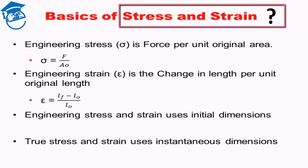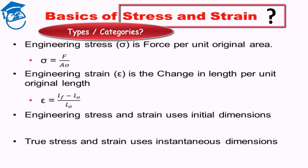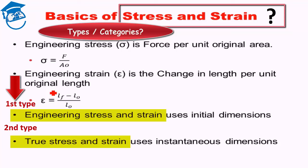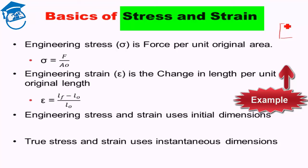There are two types of stress and strain we will be discussing: one is known as engineering stress and strain, and the other is true stress and strain. This discussion will mainly deal with engineering stress and strain. Suppose we have a block with an area of cross section A₀ and we apply a load or force F upward and downward — the material will try to resist deformation but will actually transform. The engineering stress is the force divided by the original area of cross section A₀.